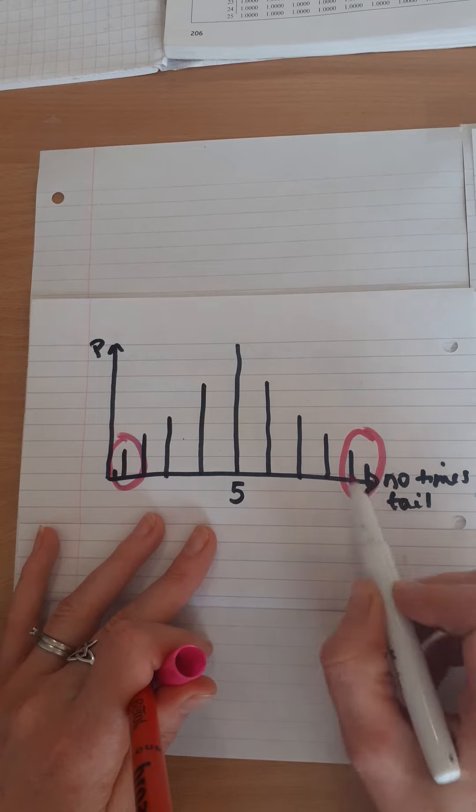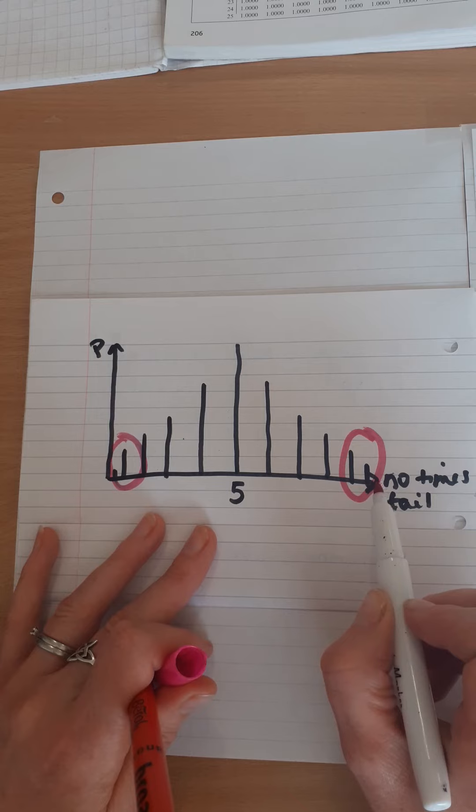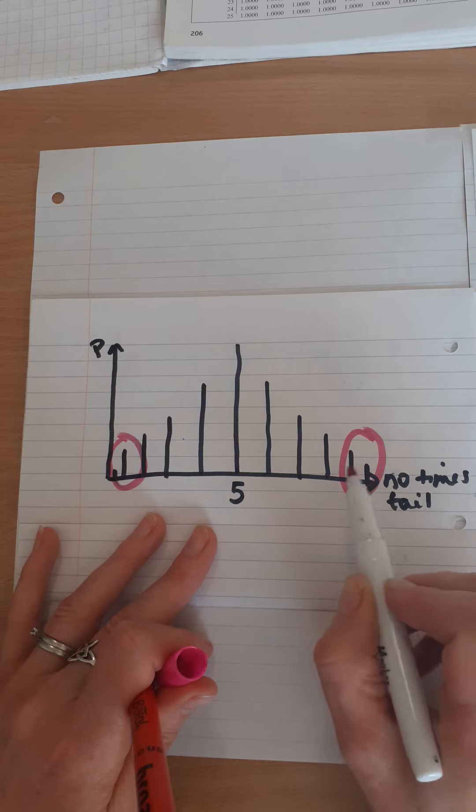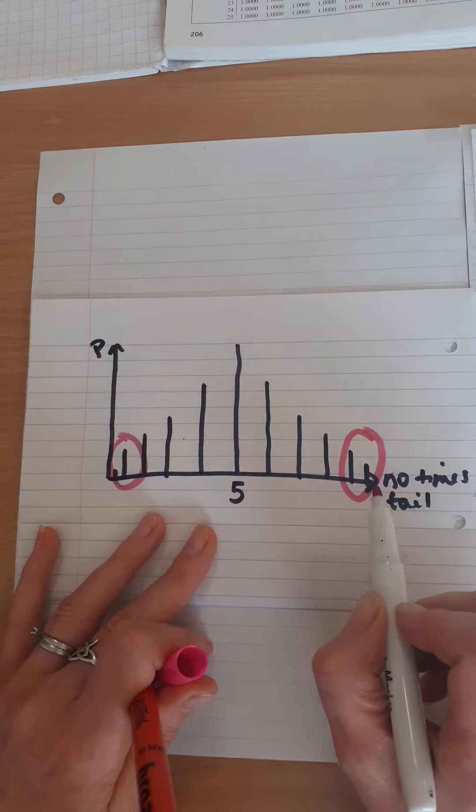And this is a region where if we did get 10 tails out of 10, we would say, hang on, our coin is biased. It's not got a probability of 0.5. So our critical region is the result that we get that would tell us our probability probably isn't right.